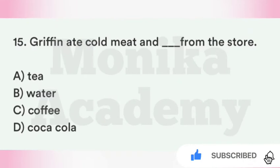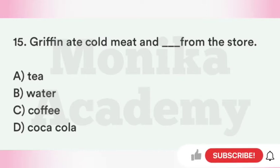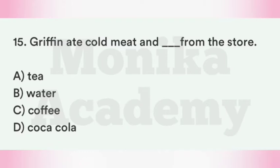Question 15: Griffin ate cold meat and ___ from the store. Option A: Tea. Option B: Water. Option C: Coffee — उसने अपने आपको warm करने के लिए coffee ली. The correct answer is Option C, coffee — Griffin ने cold meat खाया और अपने आपको warm करने के लिए coffee ली.